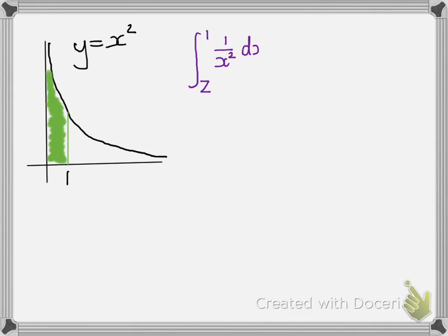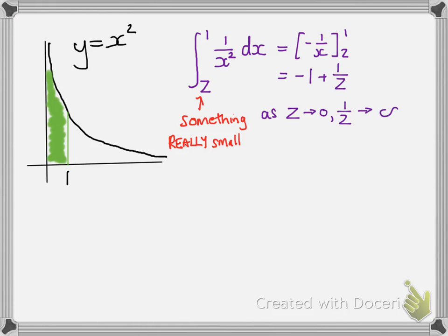So we'll integrate between z and 1 where z is something really really small, somewhere close to 0. So integrate as we did before, put in our limits, and then we're going to imagine what happens as x tends towards 0.